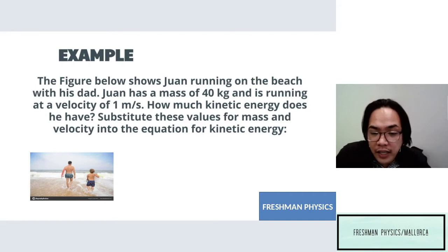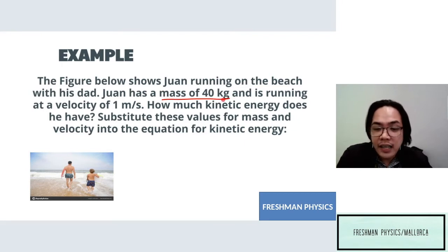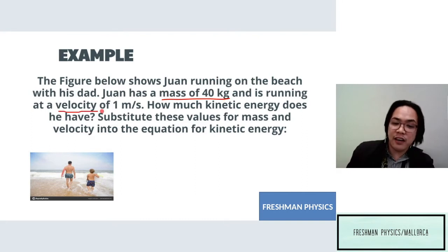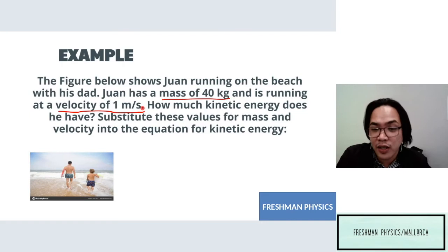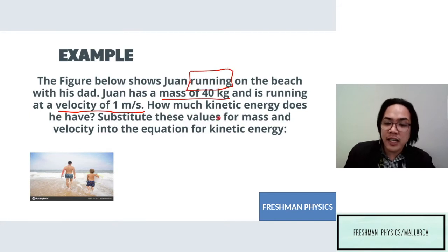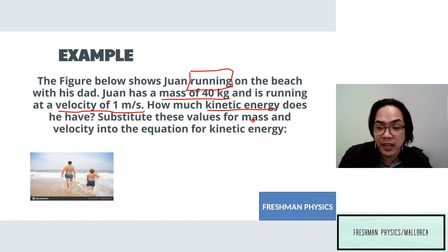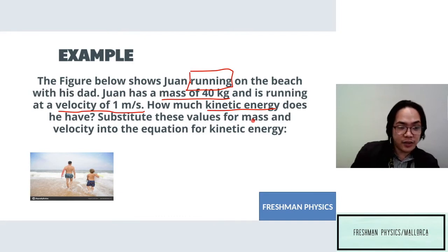The figure shows a boy running on the beach with his dad. The boy has a mass of 40 kilograms — take note, mass is a factor in solving for kinetic energy — and is running at a velocity of 1 meter per second. The key word is 'running,' which refers to movement or motion. So how much kinetic energy does he have? We will need to solve for kinetic energy by substituting the values for mass and velocity into the equation.